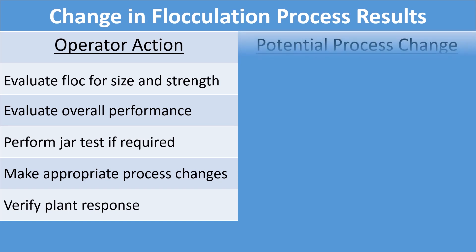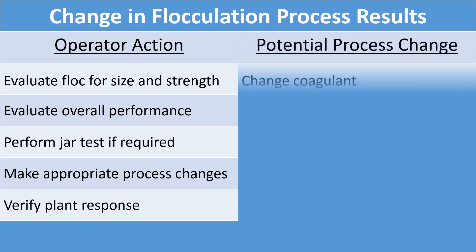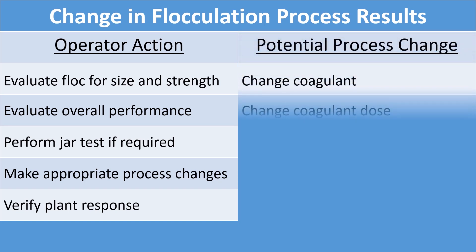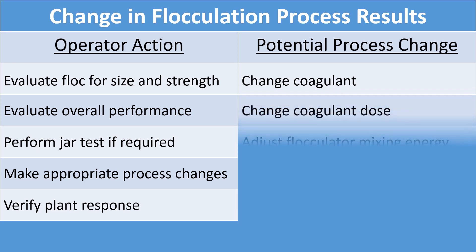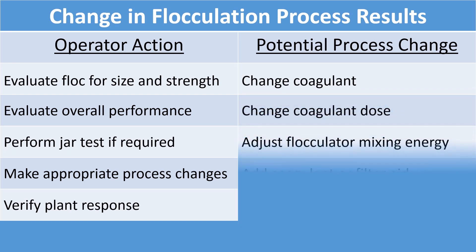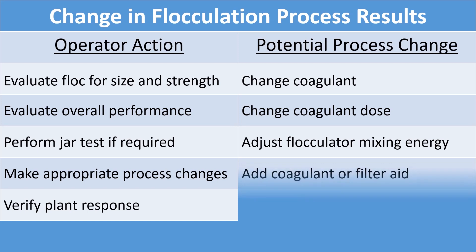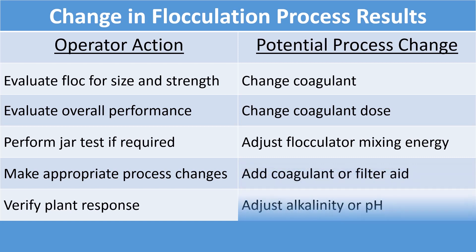The potential process changes that the operator can make include: changing the coagulant, changing the coagulant dose, adjusting the flocculator mixing intensity, adding a coagulant or filter aid, and adjusting alkalinity or pH.